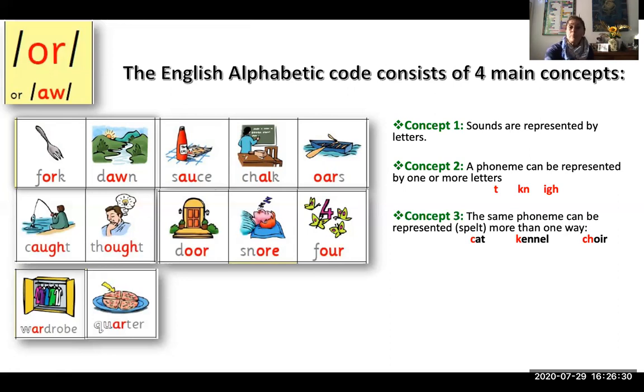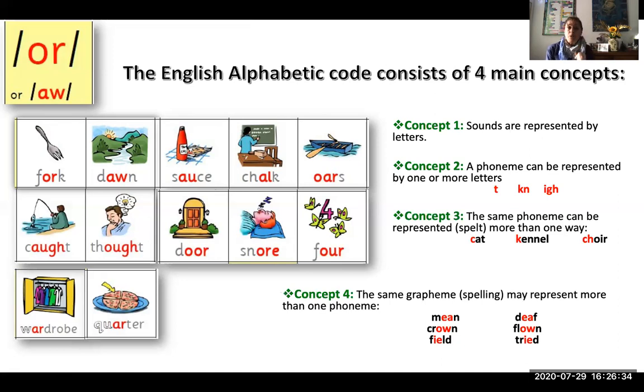And concept number four: the same grapheme or spelling may represent more than one phoneme or sound, such as the case of mean or deaf.